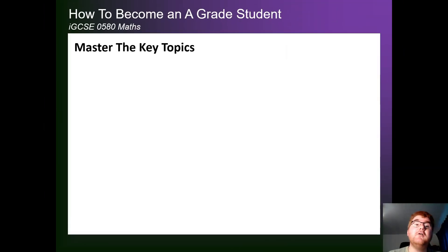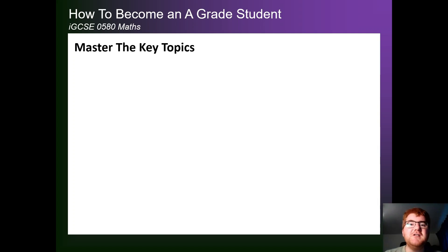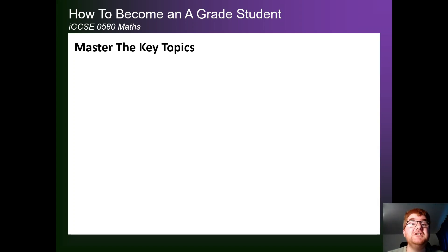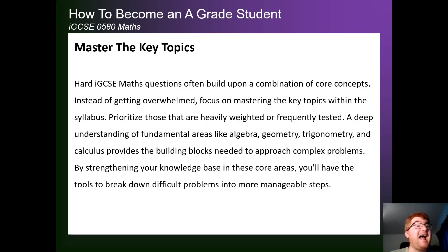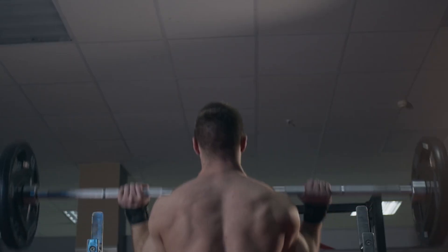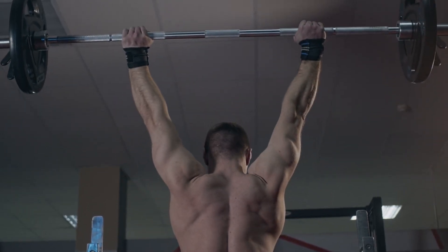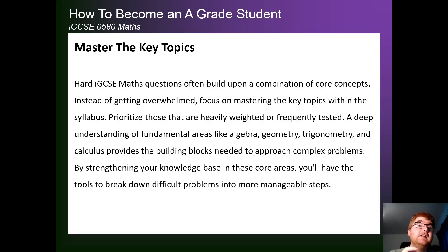The third key thing to be aware of is mastering the key topics. I've done a lot of the hard work for you — if you check out the video above, I go through my predictions with the topics that come up most often: things like sequences, things like probability, ideas like volume of 3D shapes. By knowing those key topics and the combination of them, particularly with A and A-star questions, that can give you a real leg up. By strengthening your knowledge of combining those key topics together, you'll have the particular tools to break down any question, even if it's slightly unfamiliar to you.